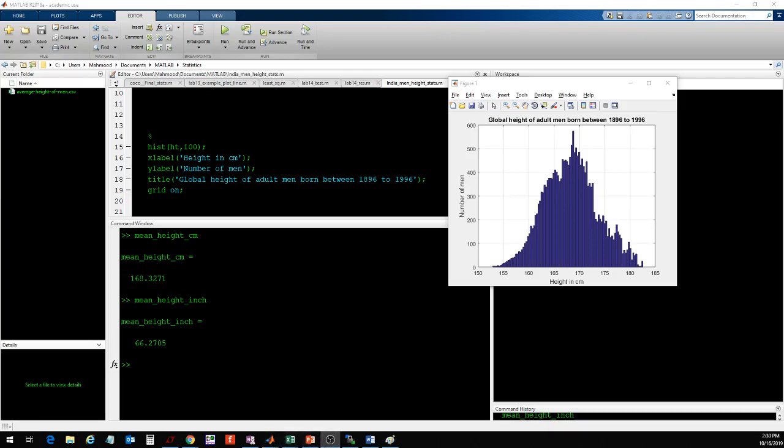Then I calculate the mean in centimeters, because my data was in centimeters, by simply using the mean command. Mean of HT gives me the mean height in centimeters, and then I take that and divide it by 2.54 to get my mean height in inches. When I run this, I can look at the workspace here.